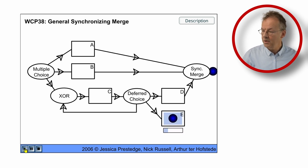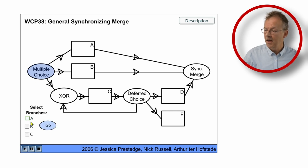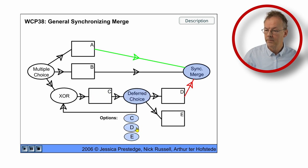And what we also can do is we can finish E and if we start a new case and let's say we just choose A and C, we finish A and now we finish C, we finish D and then the merge fires and we're done.